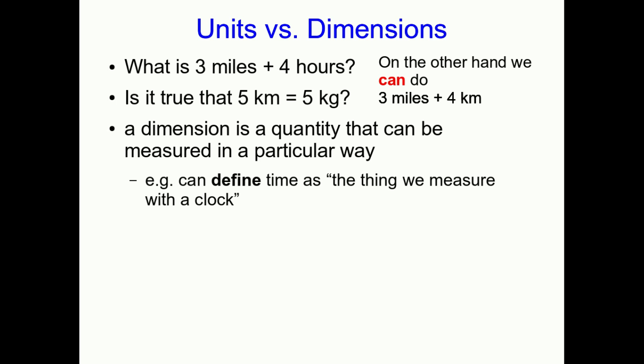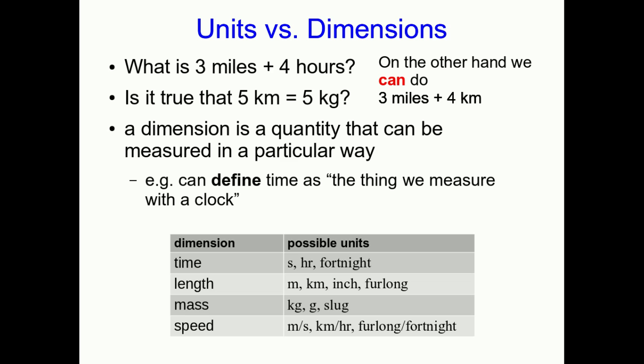And so we say these quantities have the same dimensions, even though they have different units. And so we can add them. Whereas miles and hours can't be added because they have different dimensions. You can't convert miles to hours, there's no way you can do that. So a dimension is just a quantity that can be measured in a particular way. So to clarify that, for example, time you can define as a thing you measure with a clock.